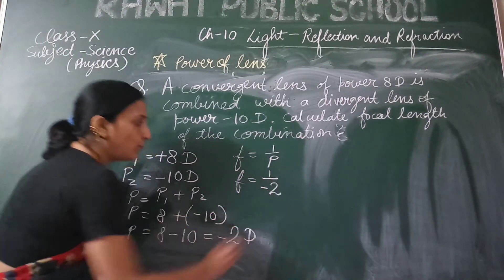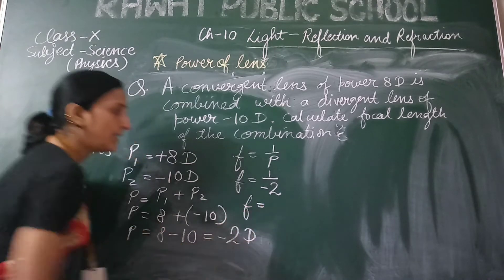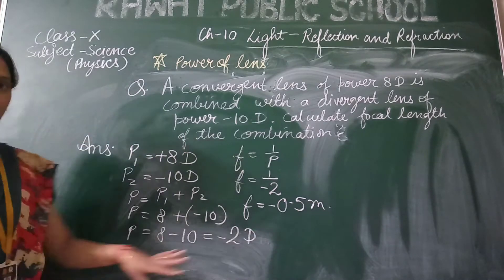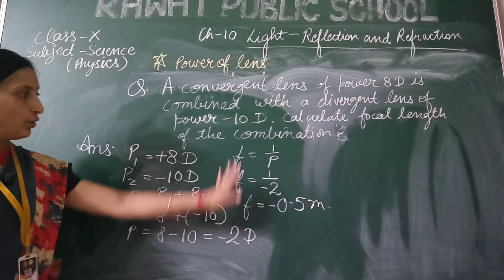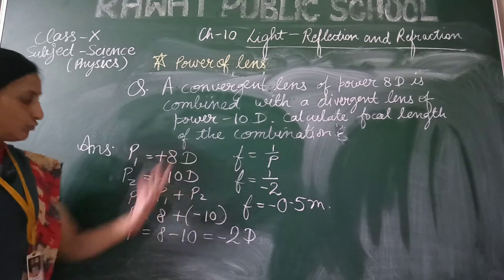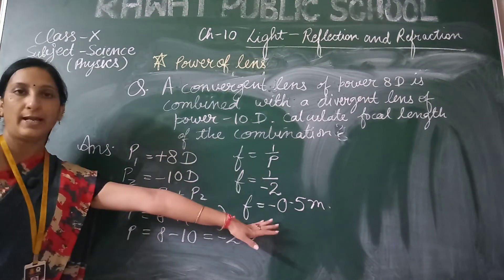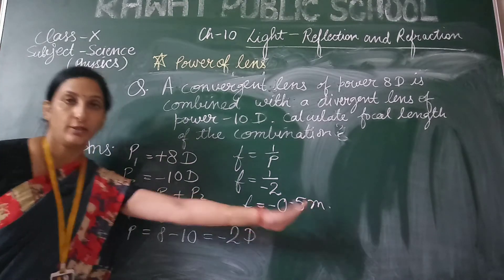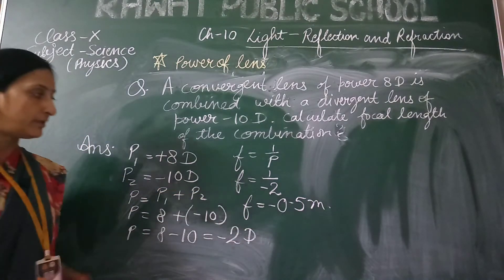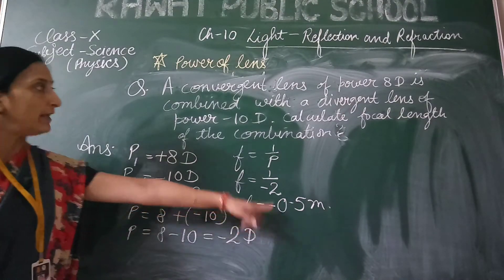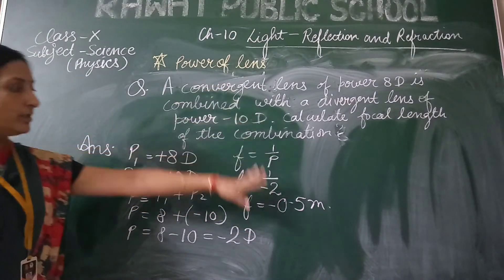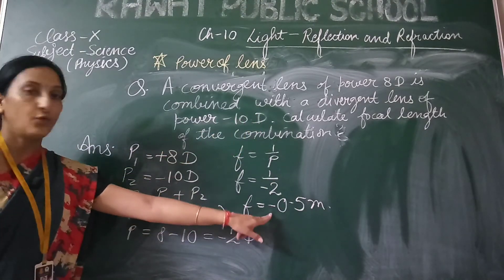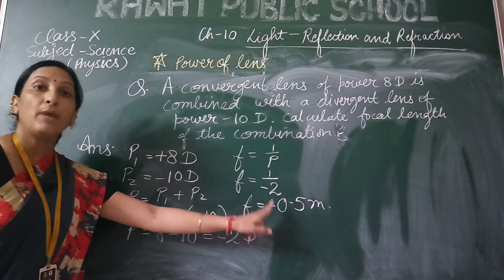F is equal to 1 upon minus 2, and we get the answer minus 0.5 meters. First we calculated the power, and from the combination's power we found the focal length. This focal length is again in meters. You can convert it into centimeters. This minus sign shows that this combination is acting as a diverging lens because its focal length has a minus sign.